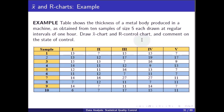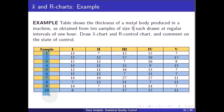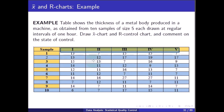Example: a table shows the thickness of a metal body produced by a machine, obtained from 10 samples of size 5, each drawn at regular intervals of one hour. Draw X-bar and R control charts and comment on the state of control.